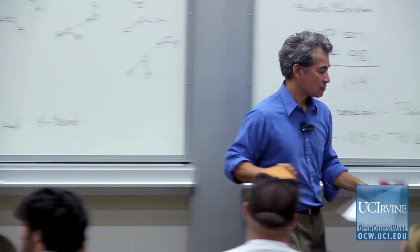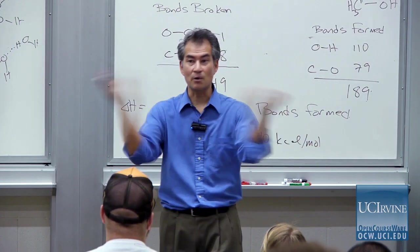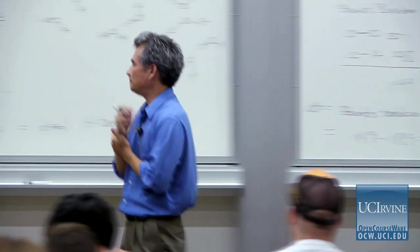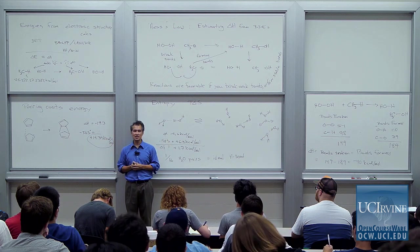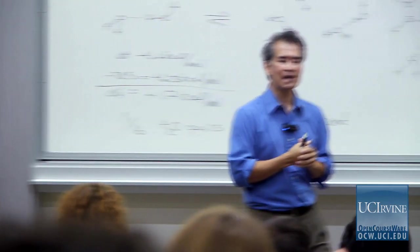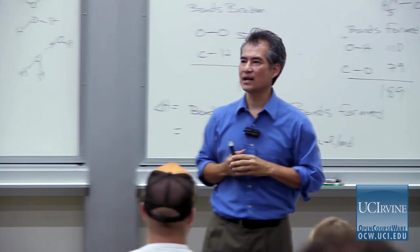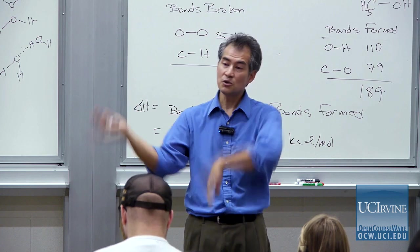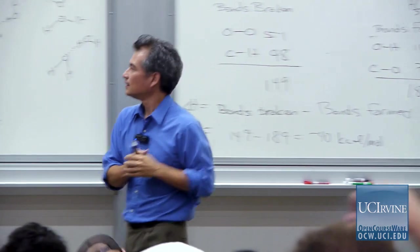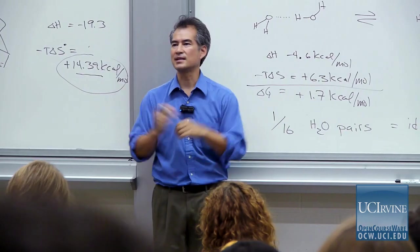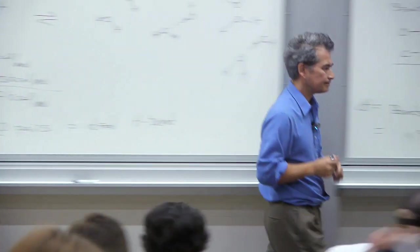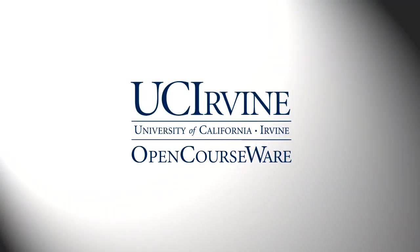Entropy can cost you somewhere between zero and about 14 kcal/mol if we ignore it when we think about two things coming together. The entropic cost for intramolecular reactions where two things don't have to collide is much cheaper. So: use Hess's Law, memorize those bond dissociation energies, know how to calculate enthalpy changes for reactions. If you get energies from electronic structure calculations, remember that ignores entropy. And don't forget this entropy component — it can really hurt you when you bring two things together.